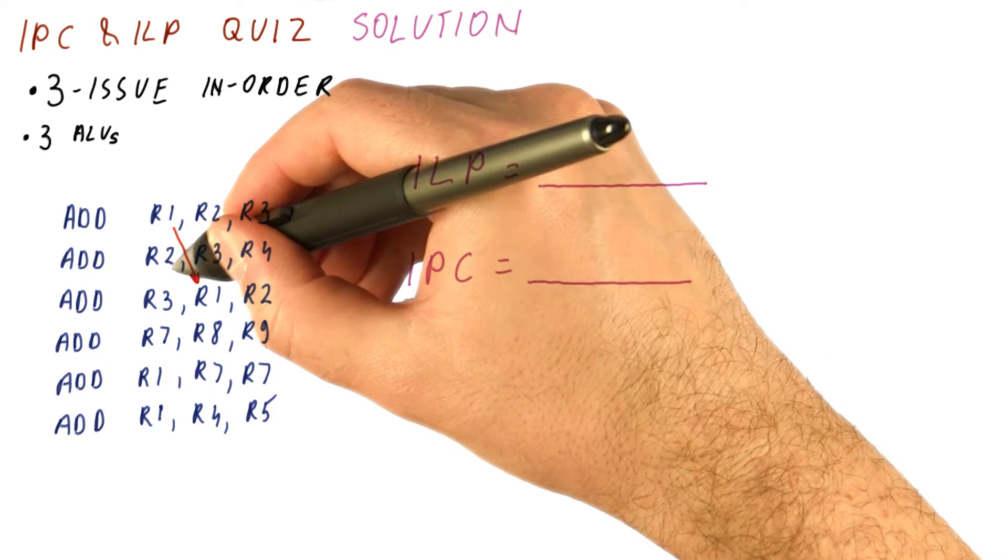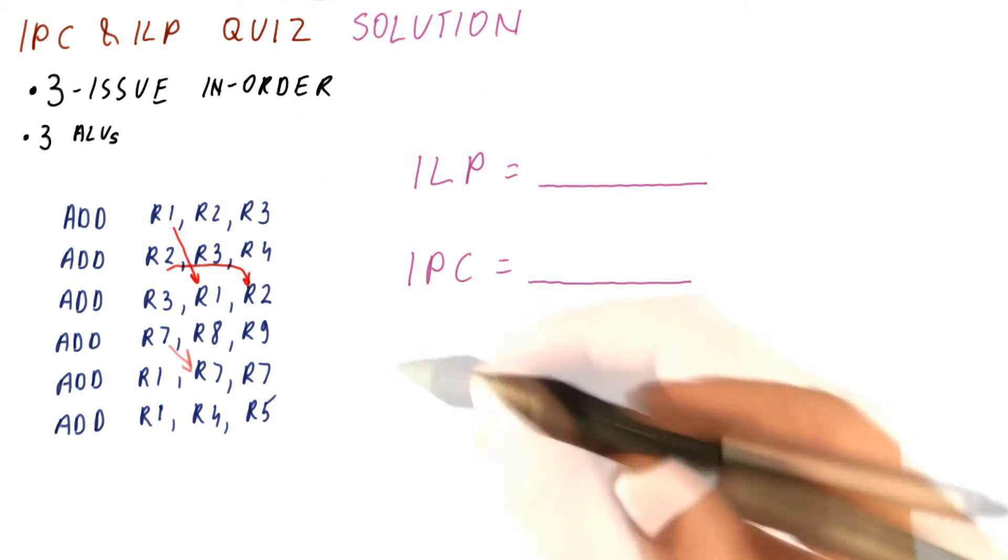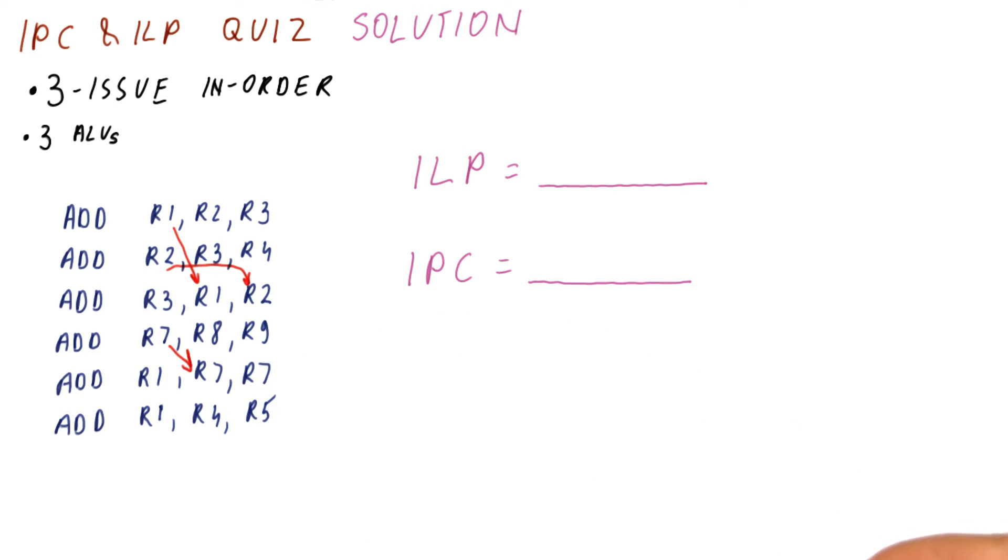There is one from here to here, and another one from here to here. And there is also dependence here from R7 to R7.